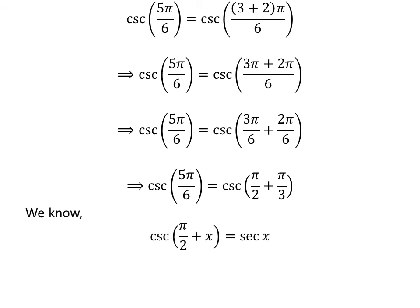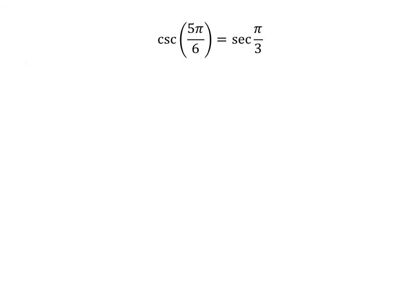We know the famous trigonometry identity: cosecant of half of pi plus x is equal to secant of x. The proof of the identity has been explained in the video appearing in the upper right corner of this video. The link of the video is also given in the description section. Application of the above identity gives us cosecant of 5 times pi upon 6 is equal to secant of pi upon 3. We know secant of pi upon 3 is equal to 2. So cosecant of 5 times pi upon 6 is equal to 2.